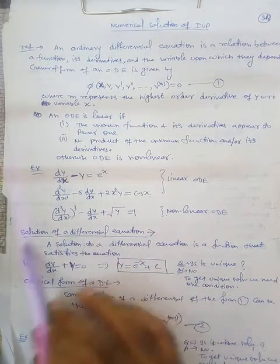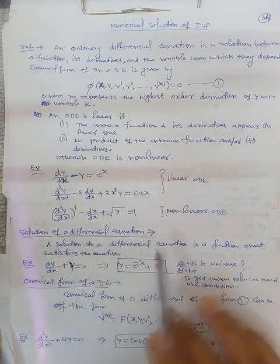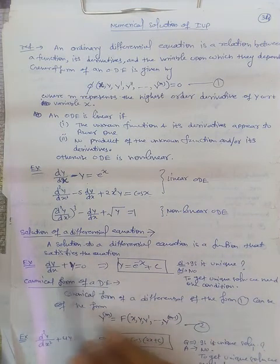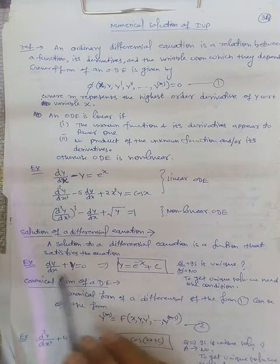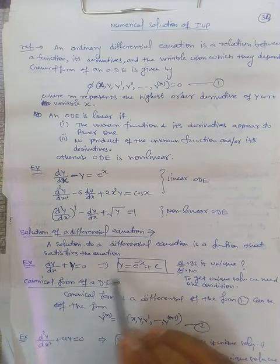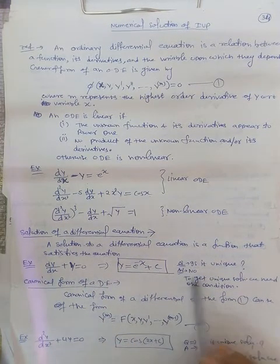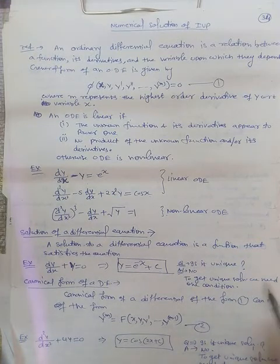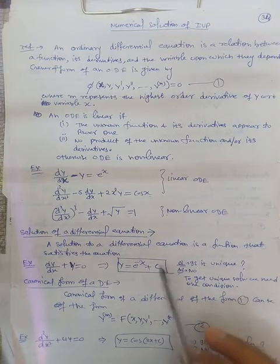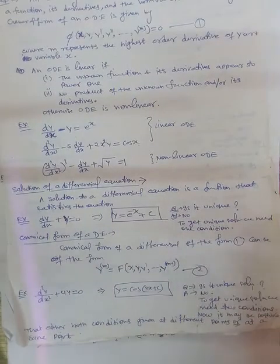Consider the procedure for solving a differential equation using the existing deterministic method. For a linear ODE, take Y to the reciprocal side: rewrite as DY/Y = −DX and integrate to get Y = e^(−X + C). This solution is not unique; to obtain a unique solution we need one condition to determine the arbitrary constant C.